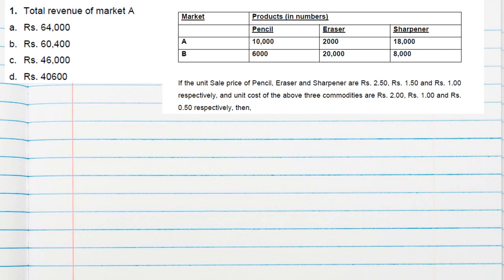Question number one asks for the total revenue of Market A. Total revenue is given by quantity multiplied by unit sale price. So I'll make a matrix of the quantity data for Market A and Market B.